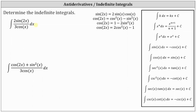We need to be a little careful here. We cannot simplify sine two x divided by cosine x to tangent x because we have a double angle in the numerator. But we can perform a substitution for sine two x. Remember, sine two x is equal to two times sine x times cosine x. Let's perform that substitution.